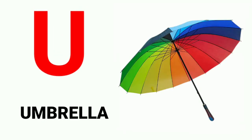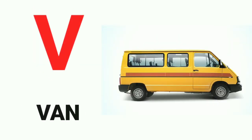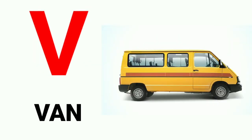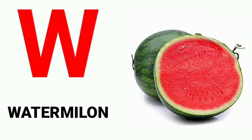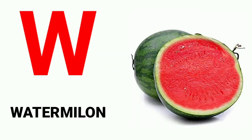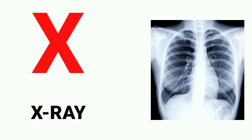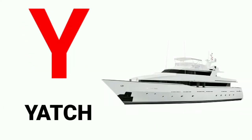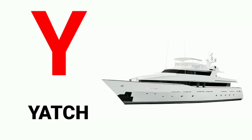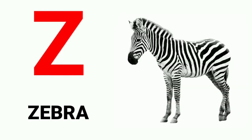S for sun, T for telephone, U for umbrella, V for van, W for watermelon, X for x-ray, Y for yard, Z for zebra.